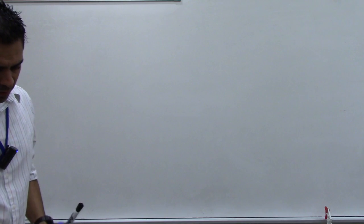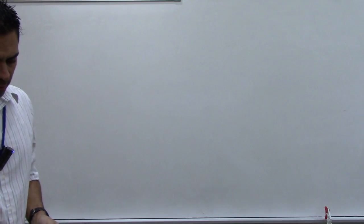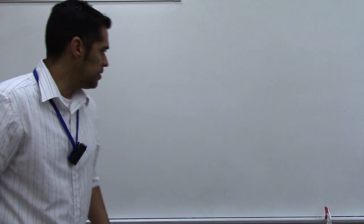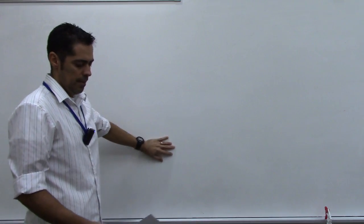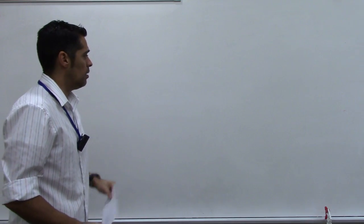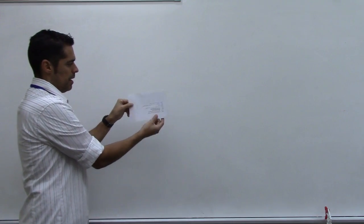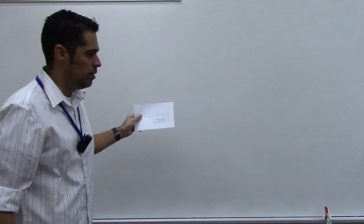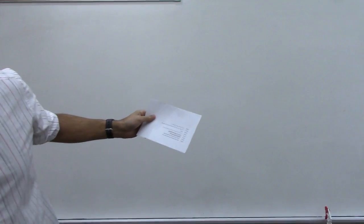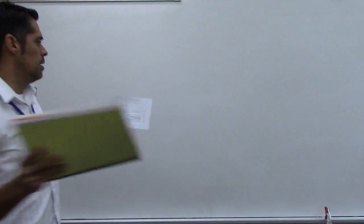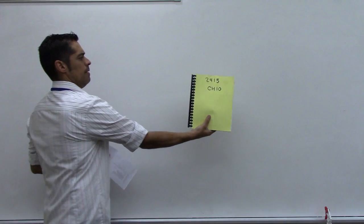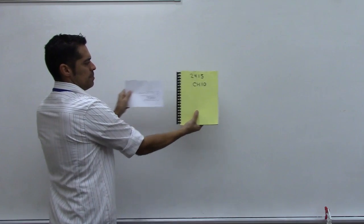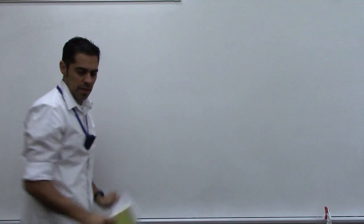Part C: two planes parallel to a third plane are parallel. This is true. If this board is a plane and I have another plane parallel to it — like this sheet of paper — and then yet another plane also parallel to this board, then those two planes must also be parallel to one another. So that's true.